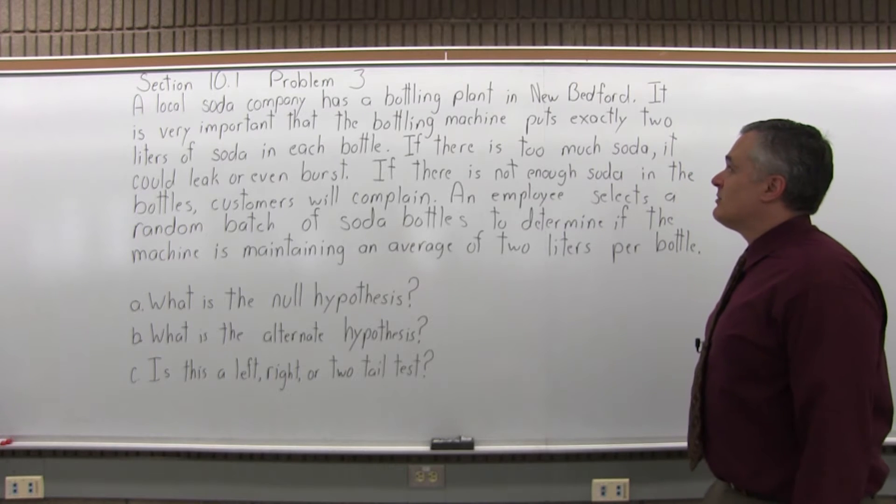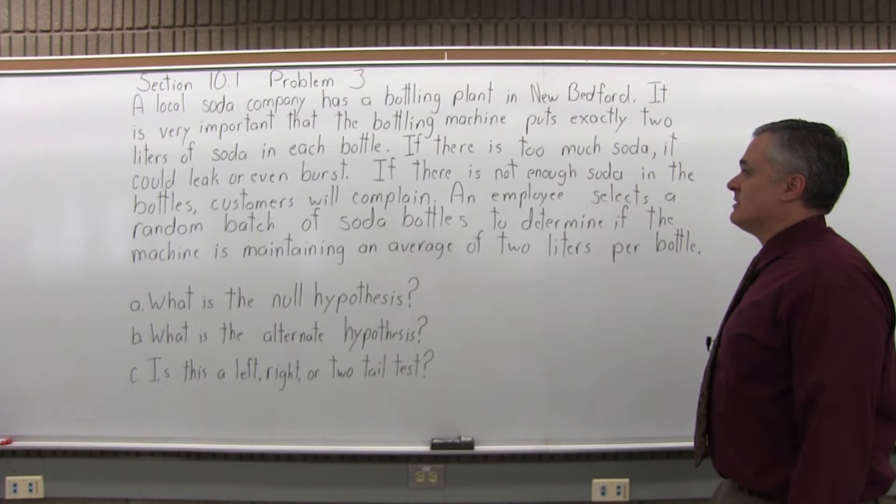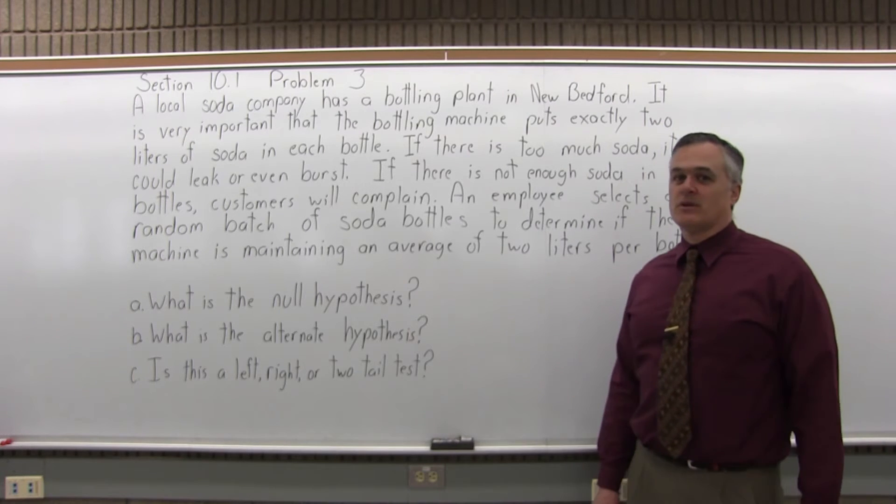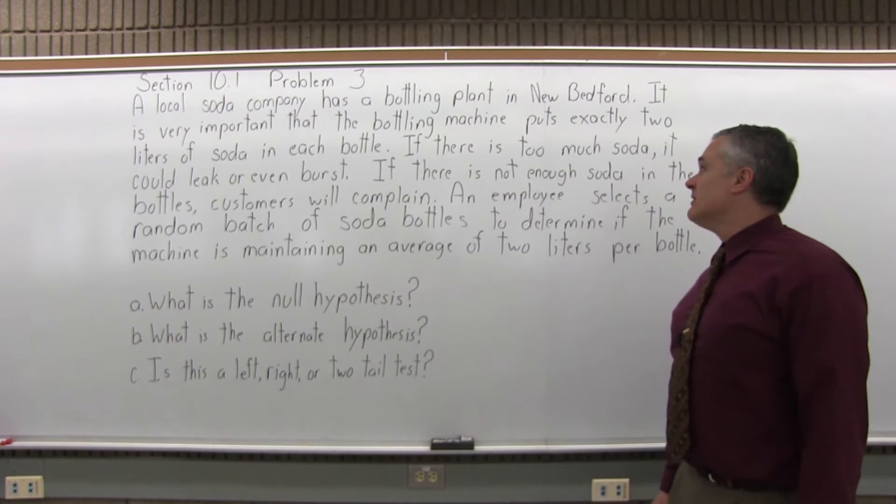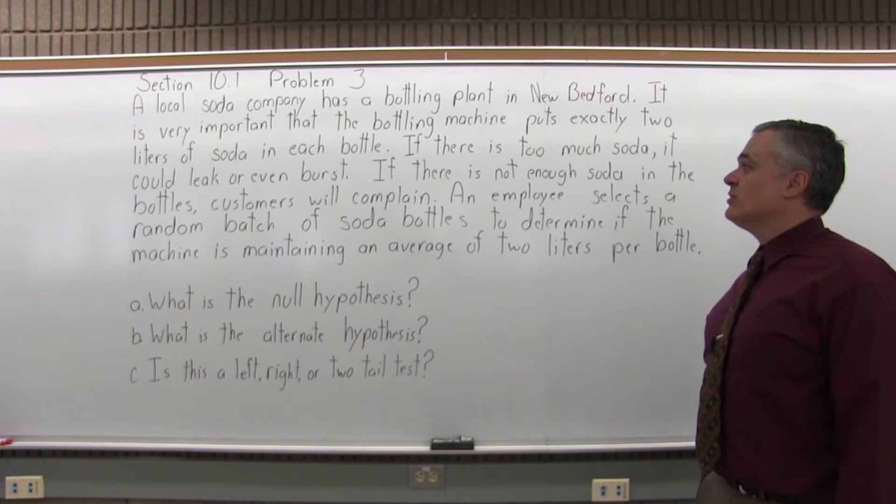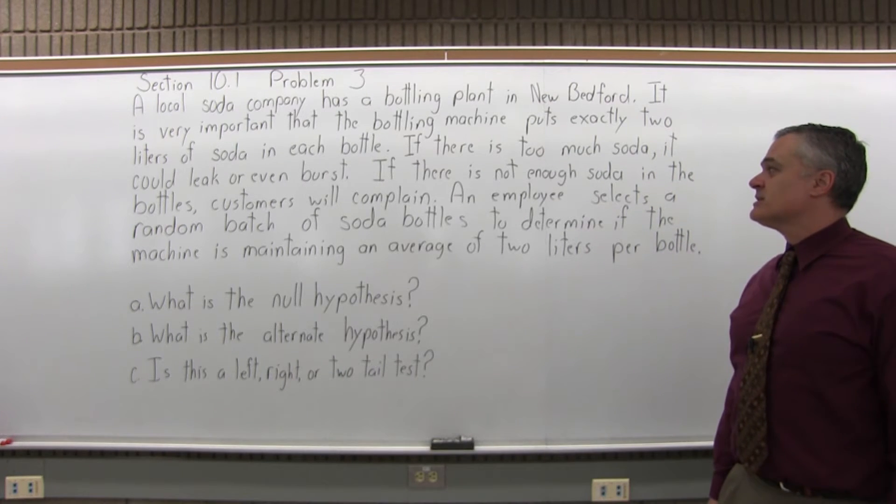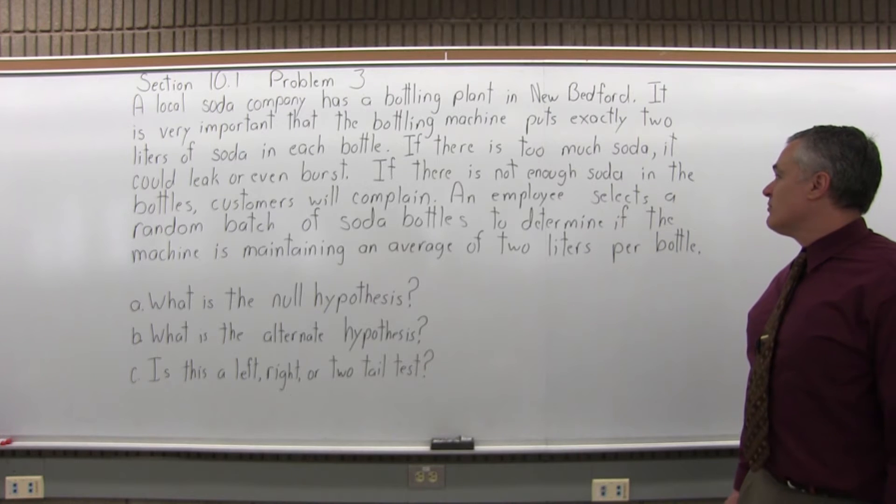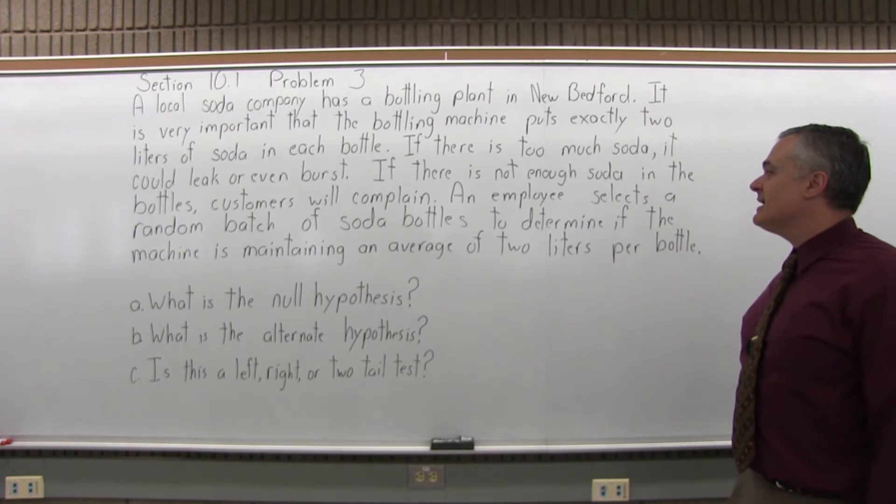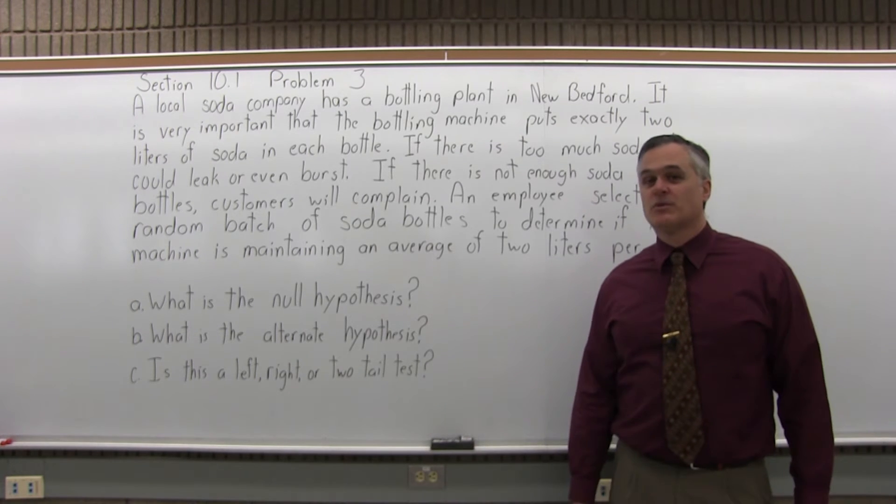It says a local soda company has a bottling plant in New Bedford. It is very important that the bottling machine puts exactly 2 liters of soda in each bottle. If there is too much soda, it could leak or even burst. If there is not enough soda in the bottles, customers will complain. An employee selects a random batch of soda bottles to determine if the machine is maintaining an average of 2 liters per bottle.